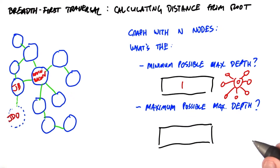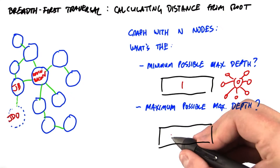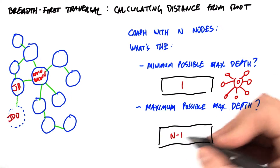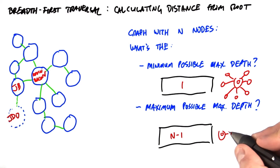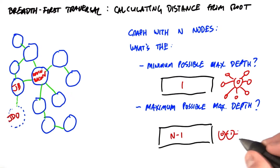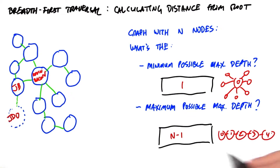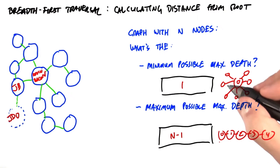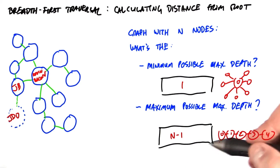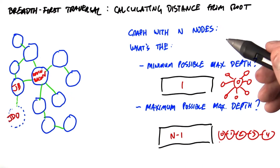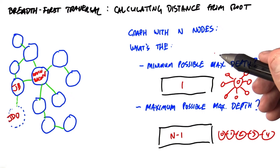On the other hand, the maximum possible max depth is going to be n-1. So what does our graph look like there? We're going to start with the root node, and then we're going to have a linear chain of graph nodes all the way out to n-1. Now it's important to realize these are two very different graphs from the point of view of parallelization.